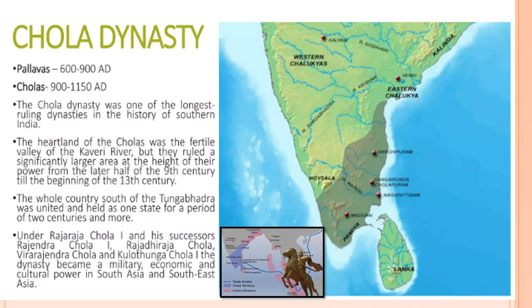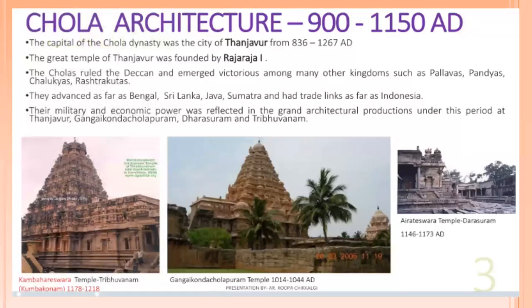Under Raja Raja Chola I and his successors — Rajendra Chola, Rajadhi Raja Chola, Veera Rajendra Chola, and Kulottunga Chola I — the dynasty became a military, economic, and cultural power in South Asia and Southeast Asia. The capital of the Chola dynasty was the city of Tanjavur from 836 to 1267 AD.